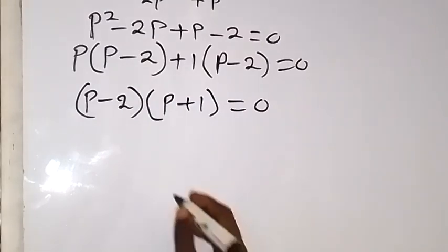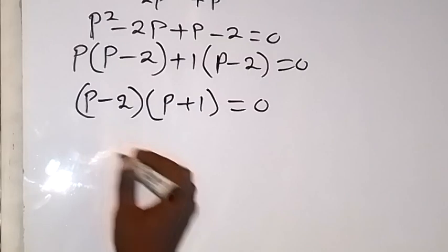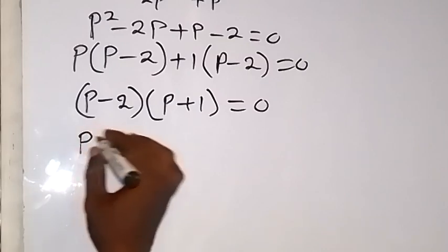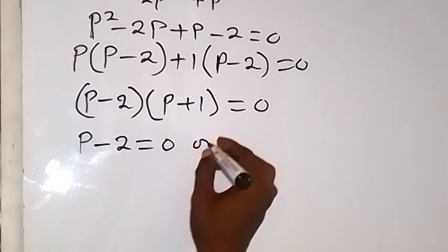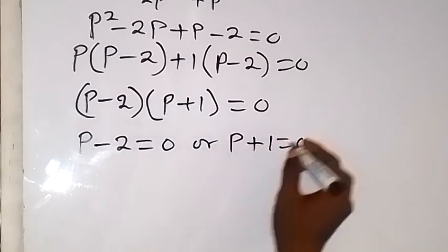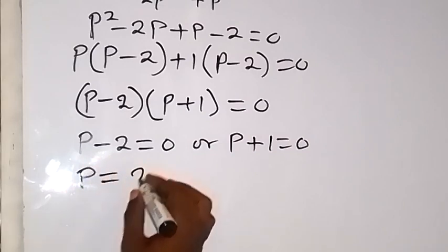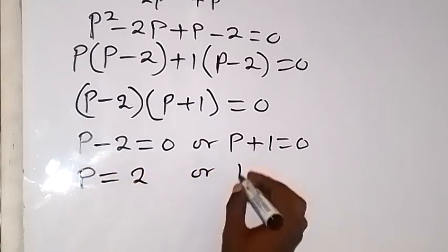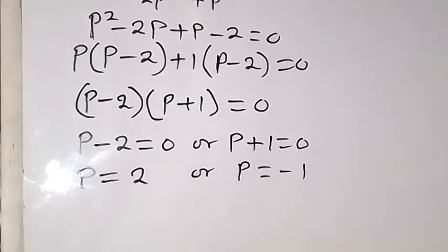These two factors multiply to give 0, so either of them will be 0. We have p minus 2 equals 0 or p plus 1 equals 0, giving us p equals 2 or p equals minus 1. Now let's consider these two cases.